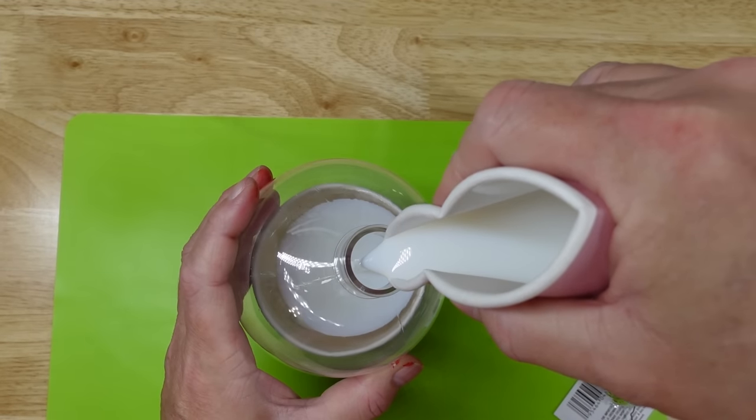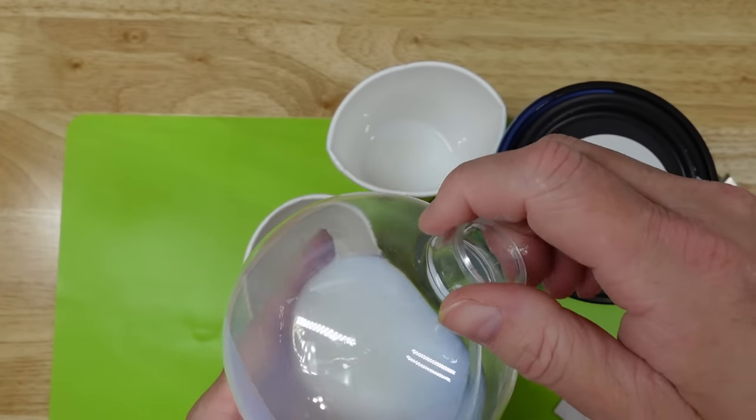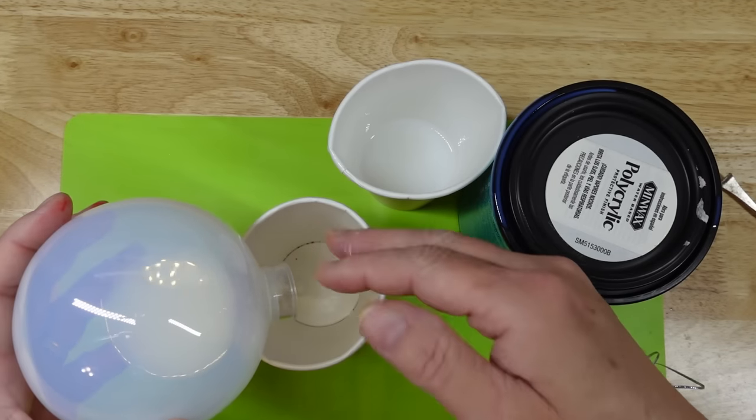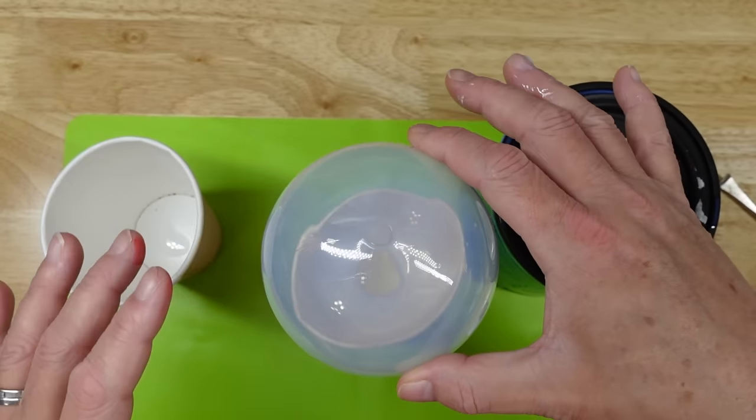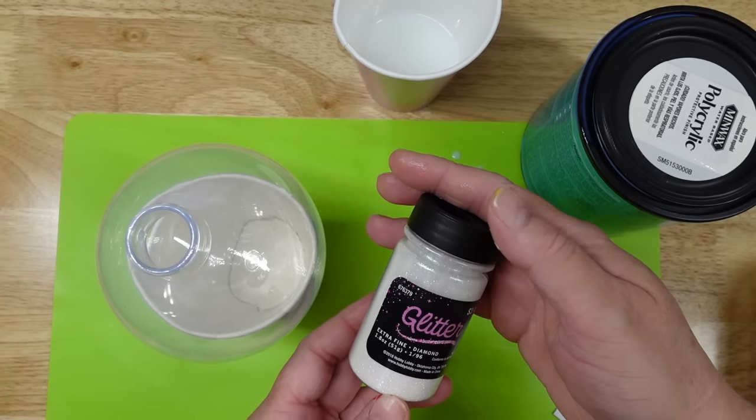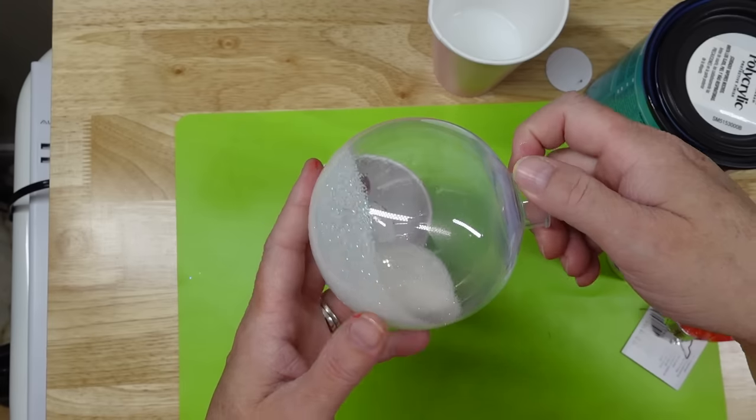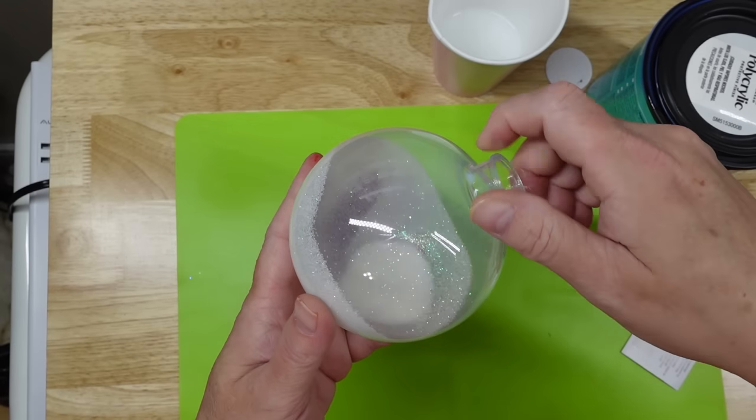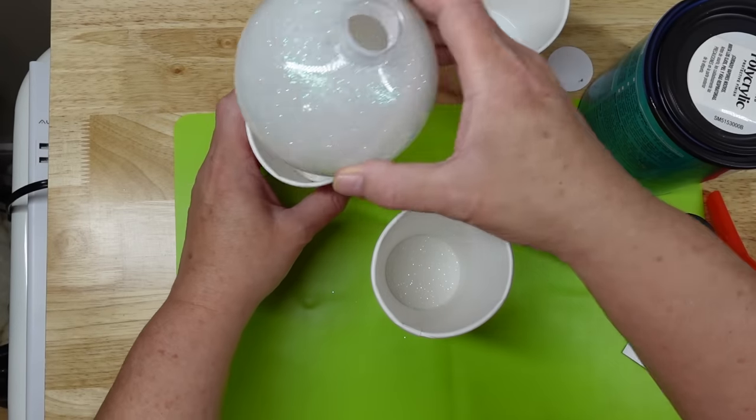I poured too much because it really doesn't take that much. Then I just swirled it around to coat the entire inside of the ornament. And then I turned it upside down in a cup and let it drain out for about three minutes. I used this ultra-fine glitter from Hobby Lobby and just poured it through a funnel into the ball. And I just rotated it to make sure that the whole inside was covered evenly. I set it upright to dry for about 24 hours.